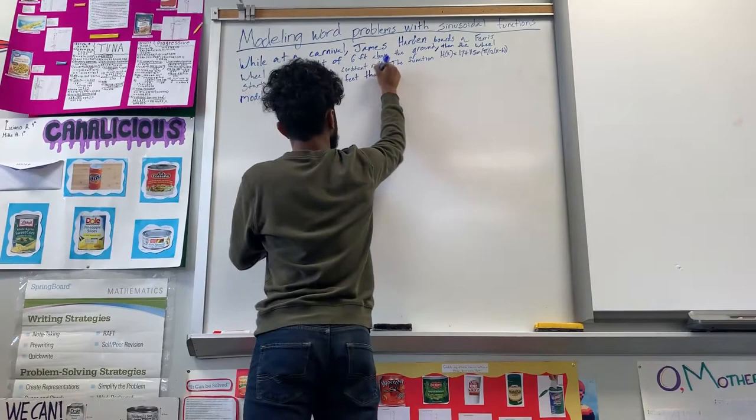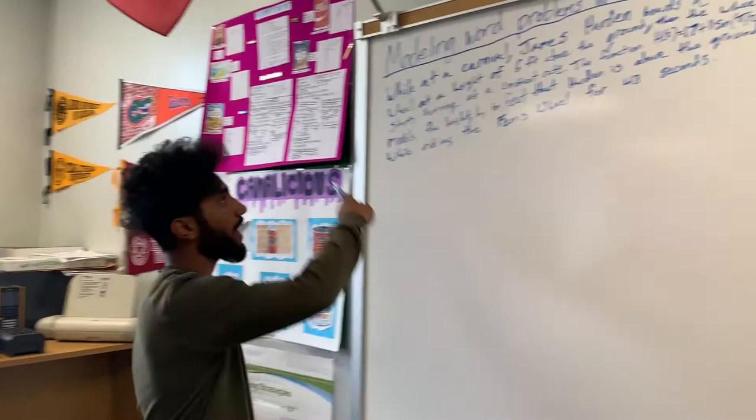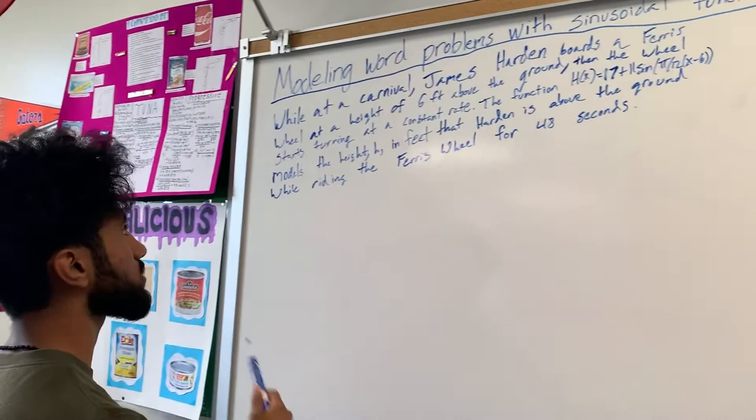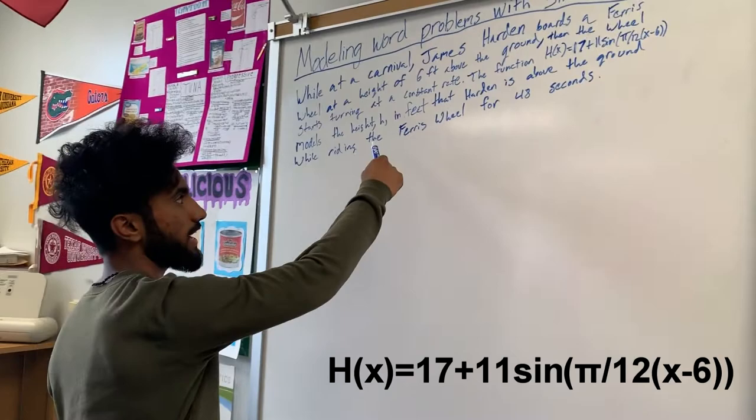So while at a carnival, James Harden boards a ferris wheel at a height of 6 feet above the ground. Then the wheel starts turning at a constant rate. The function H(x) = 17 + 11sin(π/12(x - 6)) models the height H in feet that Harden is above the ground while riding the ferris wheel for 48 seconds.